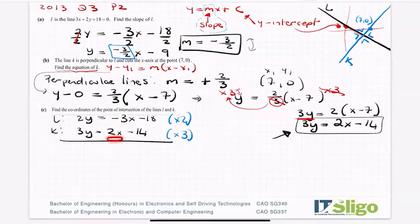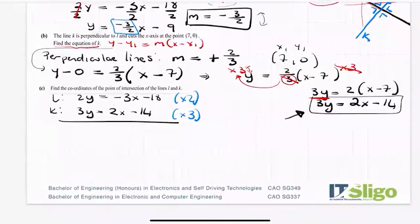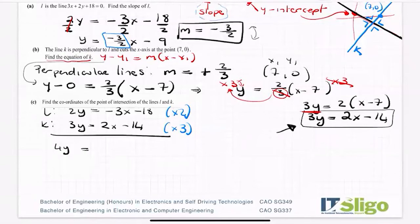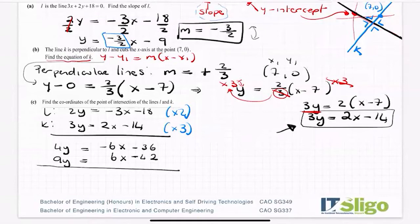To bring it up to 6x, I need to multiply the top equation by 2 and the bottom by 3. The important thing is you must multiply the whole equation - not just the x terms. So multiplying l by 2 gives 4y equals minus 6x minus 36. Multiplying k by 3 gives 9y equals 6x minus 42. You can see I have minus 6x and plus 6x, so they nicely cancel. Adding them together: 13y equals minus 78.